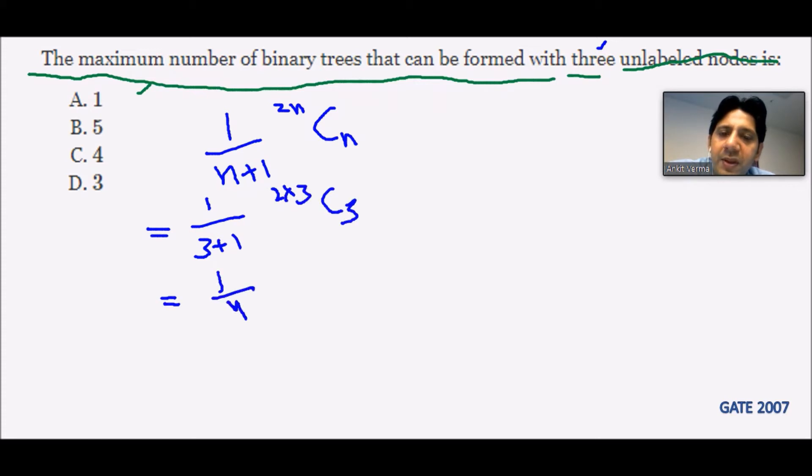Which is further equal to 1/4 * 6C3. Now, whenever we have 6C3, the formula is 6!/(6-3)! * 3!, which is equal to 1/4 * 6!/3! * 3!.